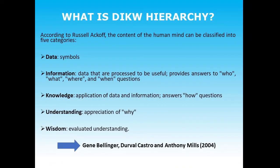According to Russell Ackoff, the content of the human mind can be classified into five categories: data, information, knowledge, understanding, and wisdom. Data is treated as a symbol. Information means data that is processed to be useful, providing answers to who, what, where, and when questions. Knowledge is the application of data and information and answers 'how' questions. Understanding is the appreciation of 'why,' and wisdom is the evaluated form of understanding.